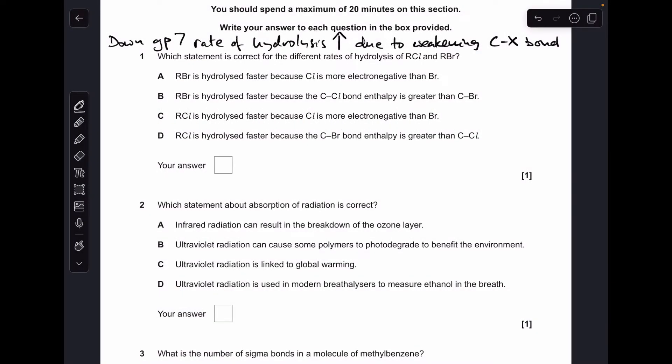Okay, so make a start. You can see I've already written up the rate of hydrolysis trend for the haloalkanes and the reason. The first thing you can do is rule out C and D because chloroalkanes are not hydrolyzed faster than bromoalkanes. A is not right because it's got nothing to do with electronegativity. So the answer is B. RBR hydrolyzed faster because that CCL bond enthalpy is greater than CBR.